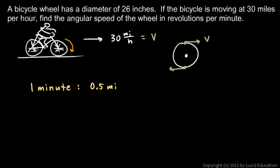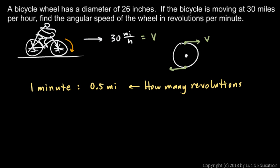Because if you're going 60 miles per hour, and there are 60 minutes in an hour, that would be one mile per minute. So 30 miles per hour is exactly half of that — half a mile in one minute. So you go 0.5 miles, and the question is: how many revolutions is this? How many revolutions of this wheel does it take for a point on the rim to move half a mile?